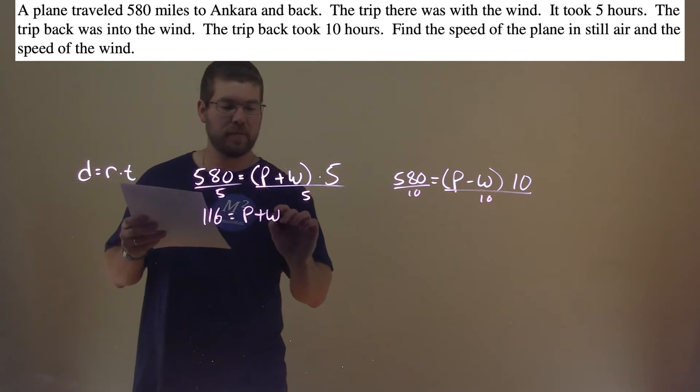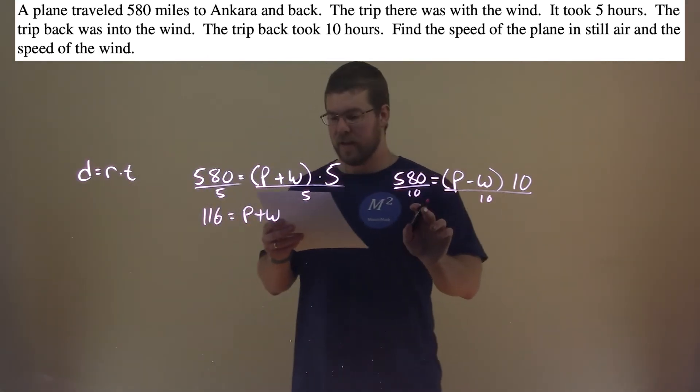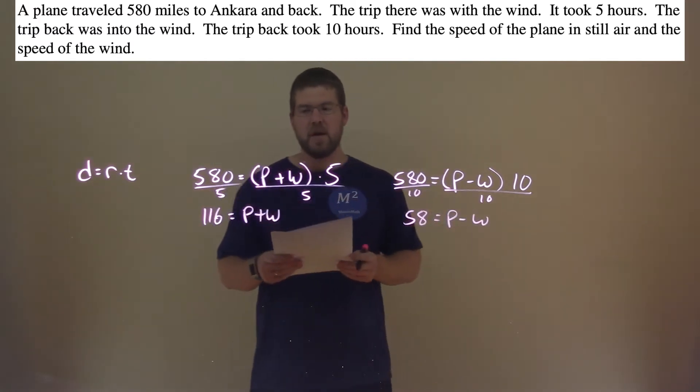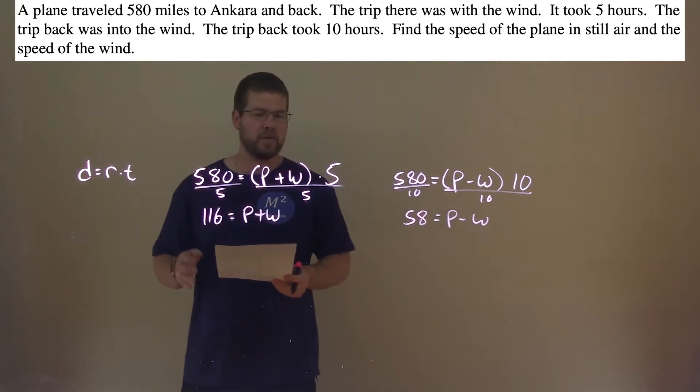So 580 divided by 5 is 116 equals P plus W, and 580 divided by 10 is 58 equals P minus W. And so that's a little easier to work with to get our values.